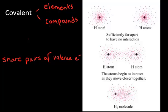Covalent bonding can occur in elements and in compounds. In elements, we've already seen covalent compounds in the diatomic elements: hydrogen, nitrogen, oxygen, chlorine, fluorine, bromine, and iodine. Those elements exist as covalent diatomic molecules. We also see covalent bonding in compounds.